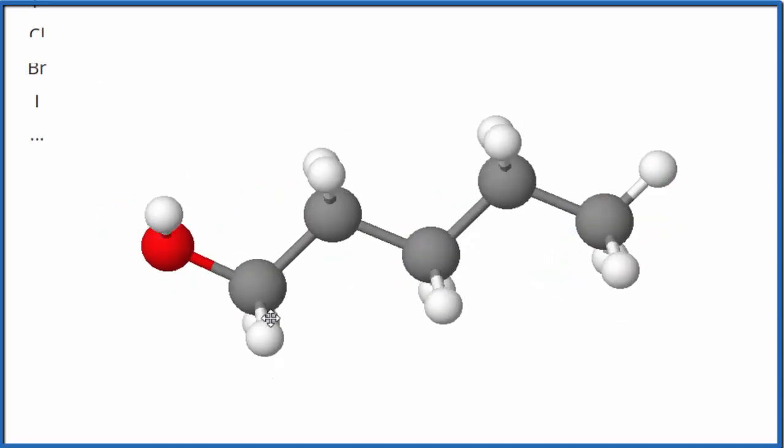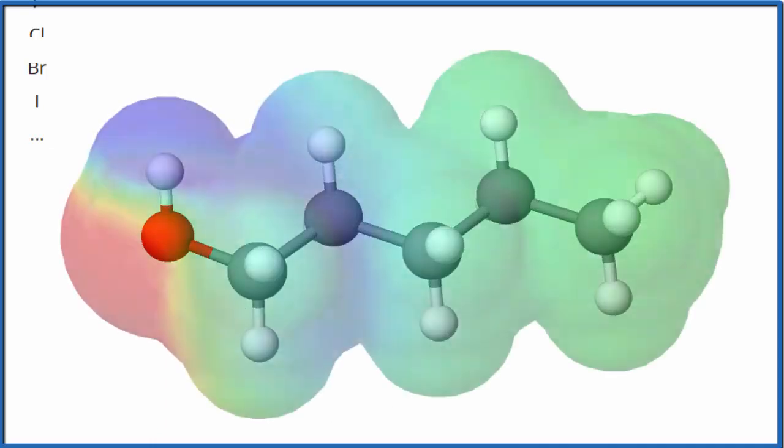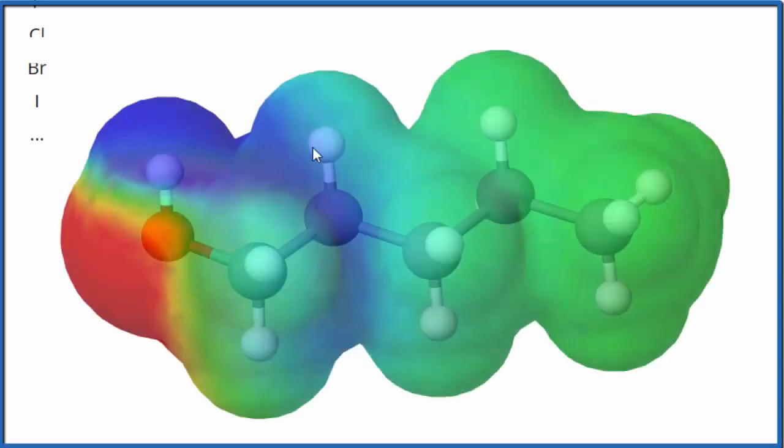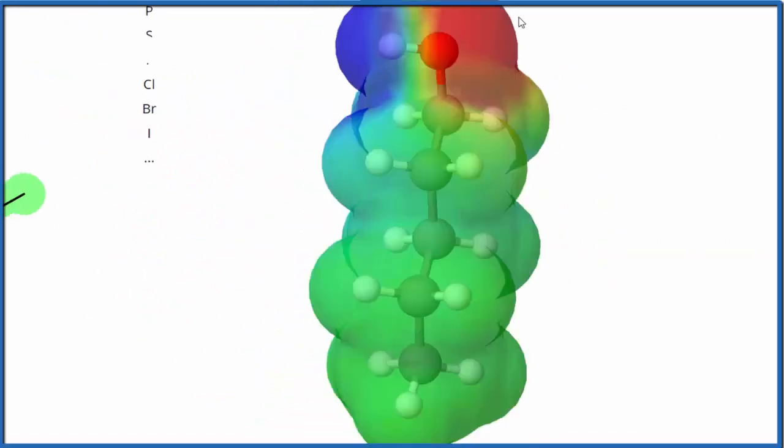So here's our pentanol molecule over here. And let's look at the surface of the molecule. We can see the red, that's negative. The blue is positive. So you see that this oxygen right here, that has the red around it. That's because it's more negative.